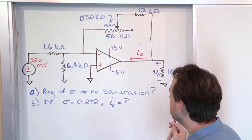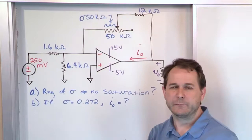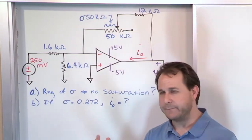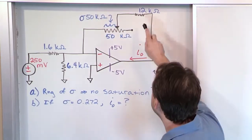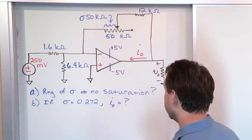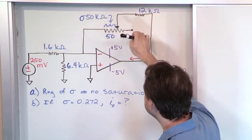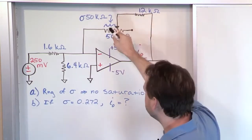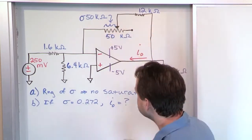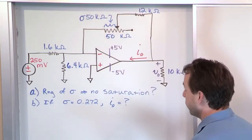This part of the circuit looks kind of similar to what we did in the last section — not the same, but similar. Basically what we have is a fixed resistor of 12,000 ohms, and then we have this side of the resistor connected in a variable way. You can kind of move this thing left and right across a 50 kilohm resistor.